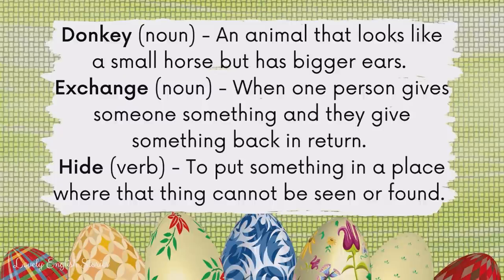A donkey. A donkey is an animal that looks like a small horse but has bigger ears. Exchange. To exchange is when one person gives someone something and they give something back in return. Hide. To hide is to put something in a place where that thing cannot be seen or found.